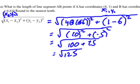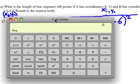But if you're asked to round to the nearest tenth, then you can get your calculator, and 125 square root is 11 point, and when you round to the nearest tenth...